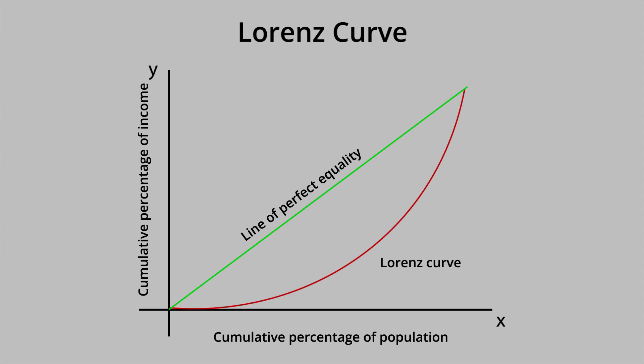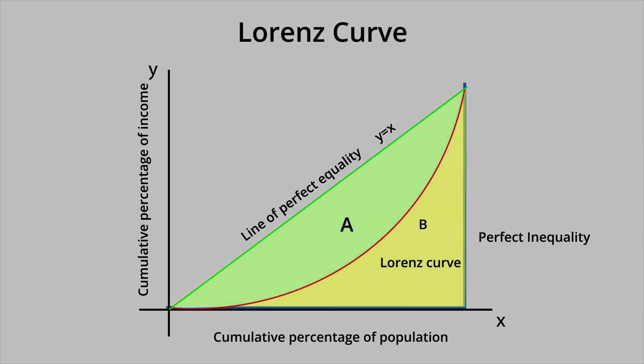The Gini Coefficient is calculated based on a graph displaying the Lorenz Curve observed data and the line of perfect equality, which is by definition the line y equals x, with a constant slope of 1. The line of perfect inequality, on the other hand, is horizontal along the x-axis until the very end of the axis, at which point it becomes perfectly vertical. The Gini Coefficient is equal to the area between the line of perfect equality and the Lorenz Curve, divided by the entire area below the line of perfect equality. The coefficient may range from 0, indicating perfect equality, to 1, representing perfect inequality.